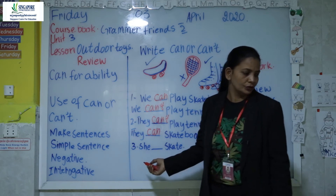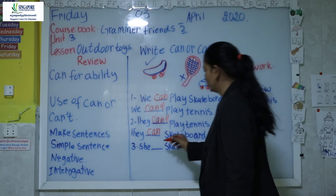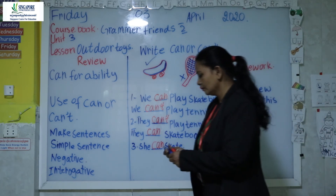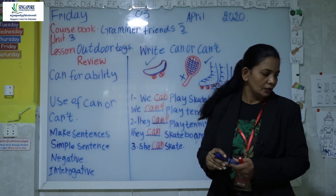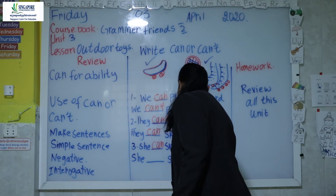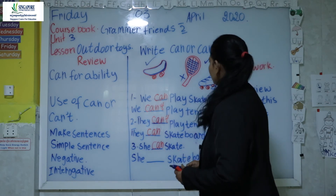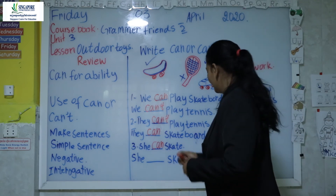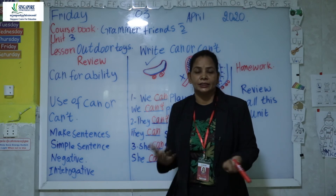The third one is: 'She can skate' — because we see a tick, so we use 'can'. The second part of the sentence tells us she can skateboard also. So she has two abilities: to skate and to skateboard.